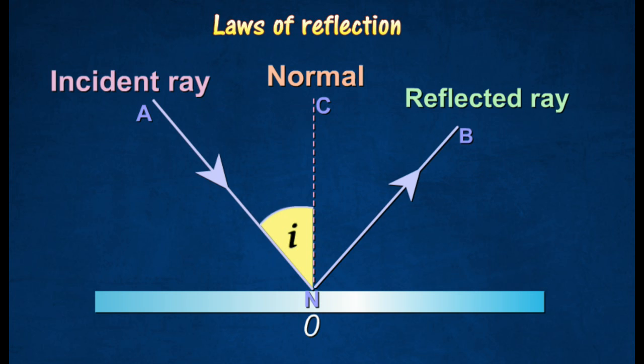The angle between the incident ray and the normal is the angle of incidence I. The angle between the reflected ray and the normal is the angle of reflection R. According to the law of reflection, the angle of incidence I is equal to the angle of reflection R.